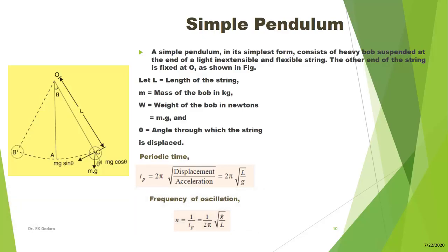Hello everyone, welcome back. In this lecture we will talk about the simple pendulum. The simplest form of a simple pendulum can be considered as one mass concentrated at a point — a point mass — attached with a massless or inextensible cord, suspended from a point O.